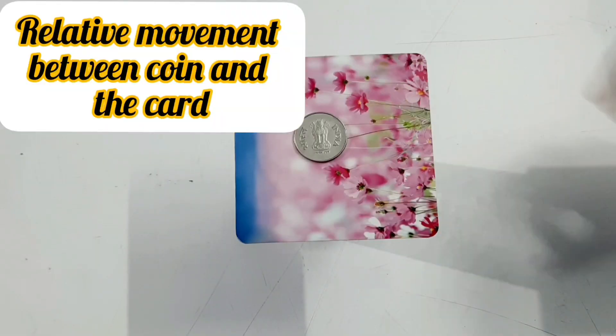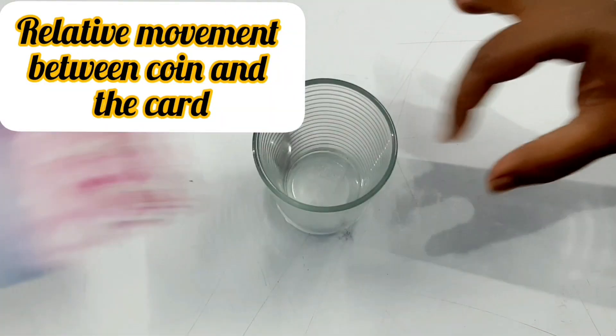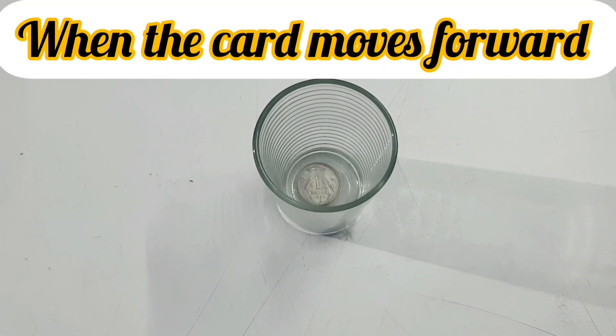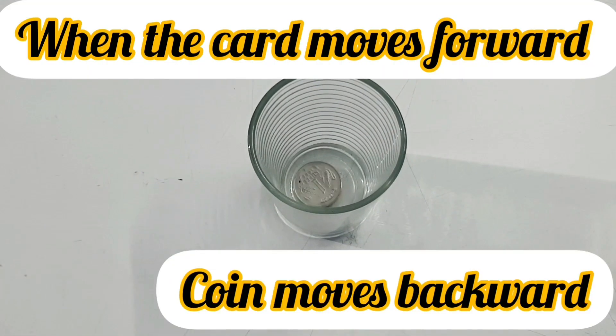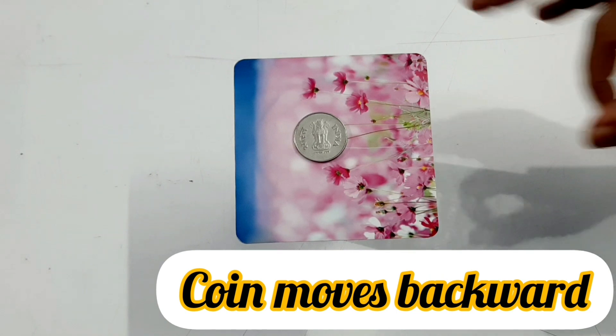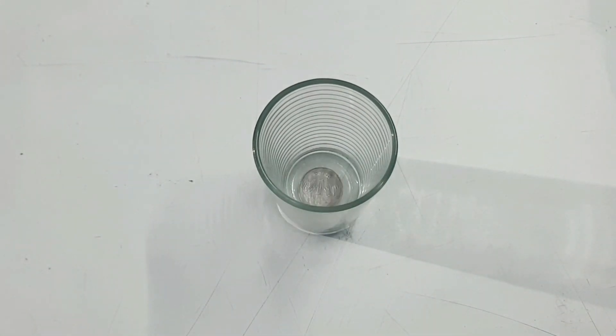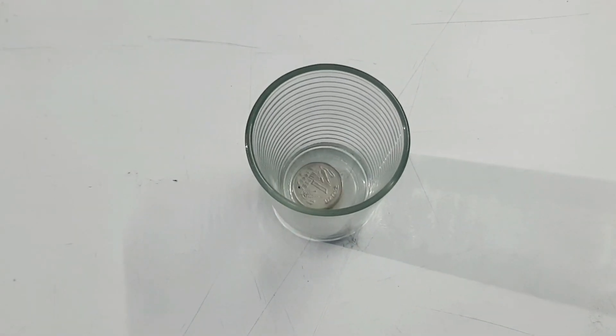When the card moved in the forward direction, the coin moved in the backward direction. Because of that, a friction force works on the coin in the forward direction, which makes the coin move in the forward direction.